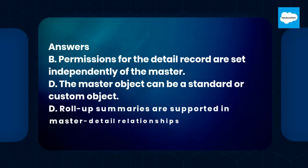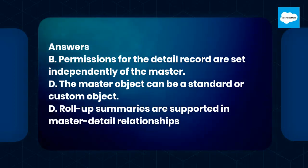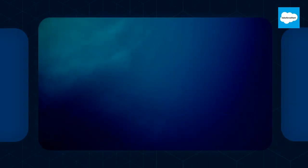Answers: B. Permissions for the detail record are set independently of the master. D. The master object can be a standard or custom object. E. Roll-up summaries are supported in master-detail relationships.